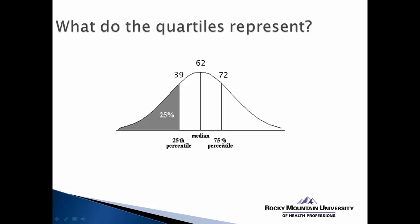The interquartile range is the range of scores between the 25th and the 75th percentile, representing the middle 50% of the curve. We can conclude that 50% of all test scores will be between 39 and 72. The quartiles are ways we can represent the distribution of scores — we can discuss them in terms of percentiles and how they divide up scores within the normal curve.